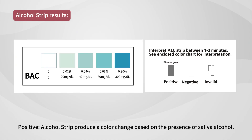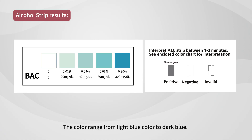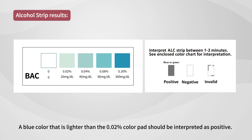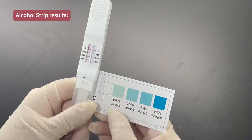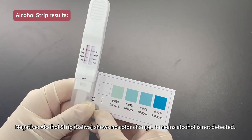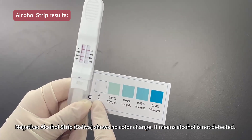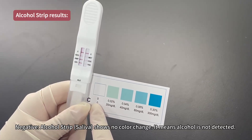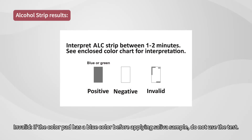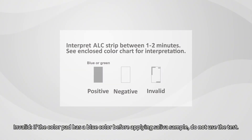Alcohol strip results: The alcohol strip produces a color change based on the presence of saliva alcohol. The color ranges from light blue to dark blue. A blue color that is lighter than the 0.02% color pad should be interpreted as positive. A negative result shows no color change, meaning alcohol is not detected. If the color pad has a blue color before applying the saliva sample, do not use the test.